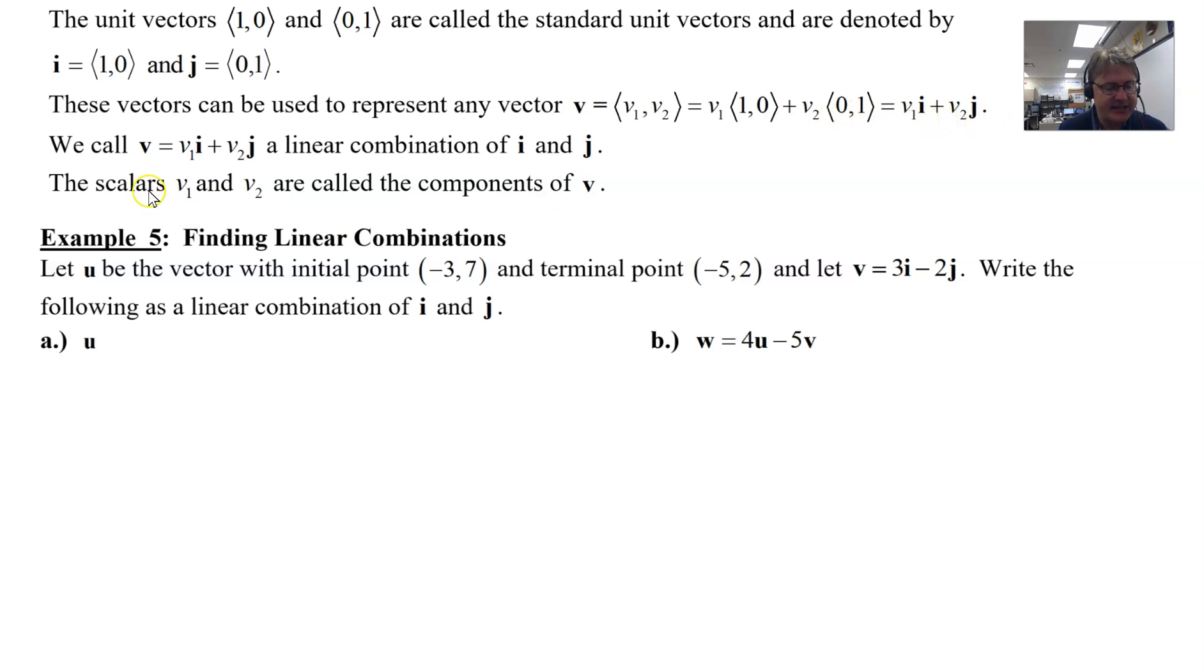That's what we call a linear combination of i and j. Notice the scalars v₁ and v₂ are going to be the components of vector v.